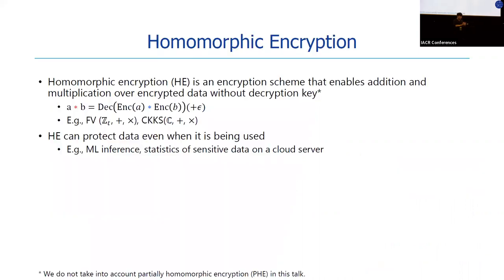Let's begin with homomorphic encryption. Homomorphic encryption is an encryption scheme that enables addition and multiplication over encrypted data. In this talk, when we say HE, this implies exact homomorphic encryption or approximate homomorphic encryption that supports addition and multiplication. For example, there is the FV scheme for modular ring and the CKKS scheme for complex ring. HE can protect data even when it is being used — for example, for machine learning inference and statistics of sensitive data while preserving privacy.